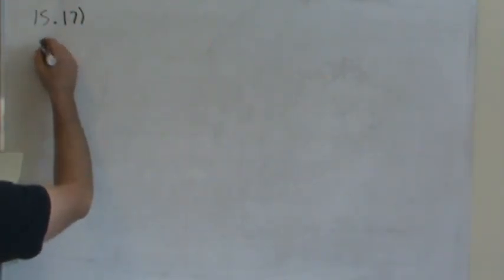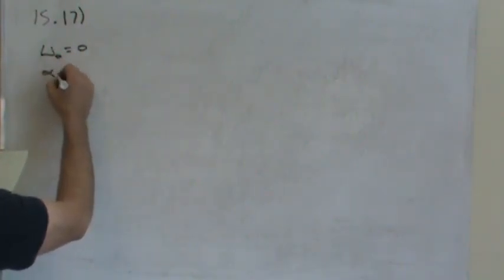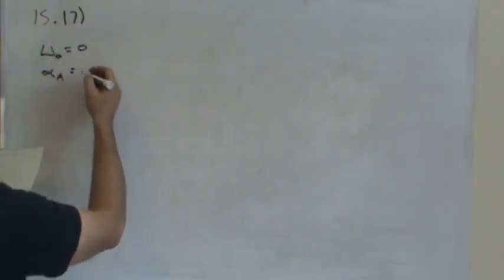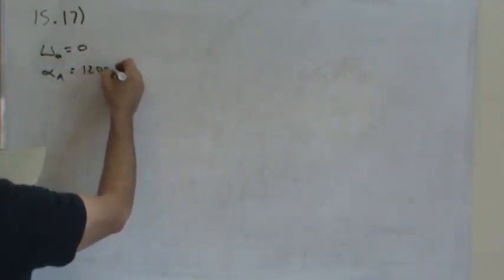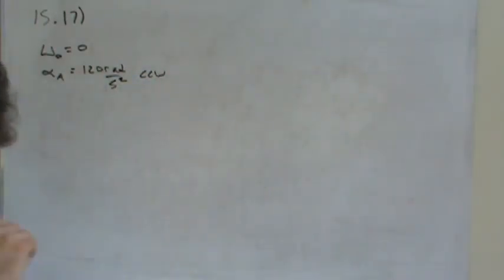So there's a figure on that page I would recommend that you reference, but let's write down essentially what's given. That is, the initial angular speed is zero, the acceleration of A is 120 radians per second squared counterclockwise, and A is the lower drum.